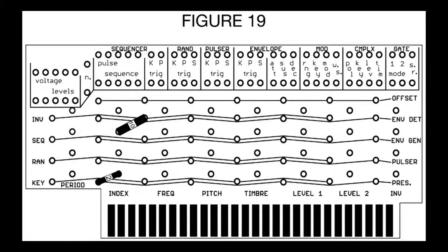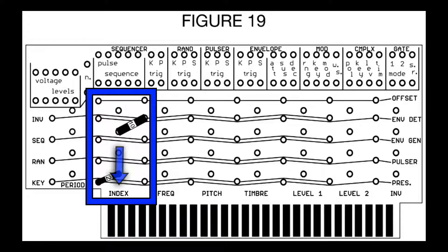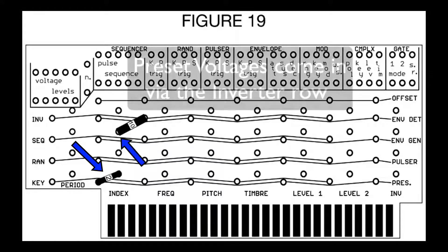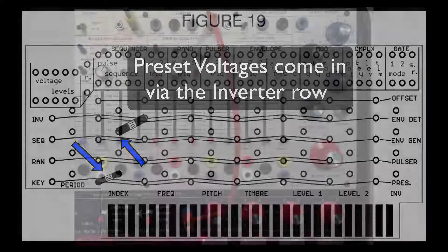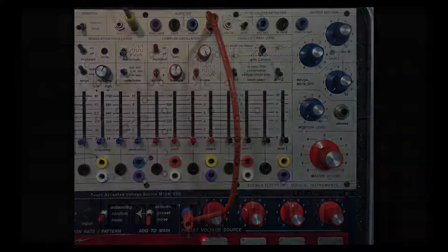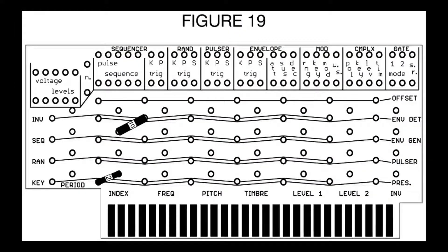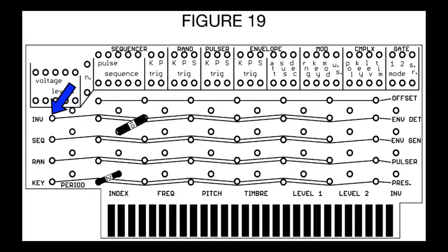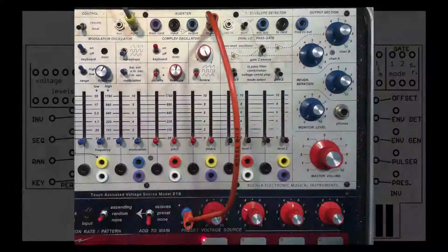Figure 19 shows how you can sum two different voltages into the same input — for instance, using pressure to go to the mod index and also the preset voltage sources to go to the mod index. Remember to set up the front panel with the preset voltages going to the inverter in, to card. I also noticed a typo or discrepancy between the Figure 19 image and the text: the text says the preset voltages go to the envelope detector row, but the image shows it going to the inverter row. It doesn't matter — either one will work, just as long as you've got the card and faceplate set up to the correct two card input.